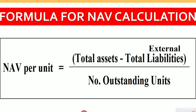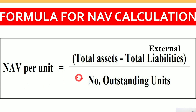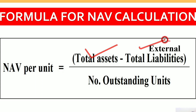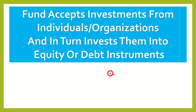NAV per unit is calculated as total assets minus total external liabilities, divided by number of outstanding units. In further slides we will discuss what total assets, total external liabilities, and outstanding units are, so that we can complete the formula and calculate NAV at the end.